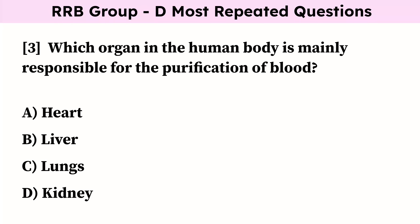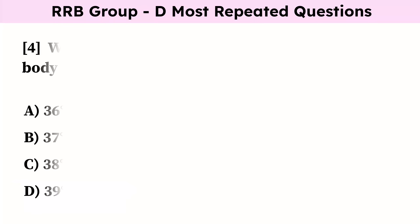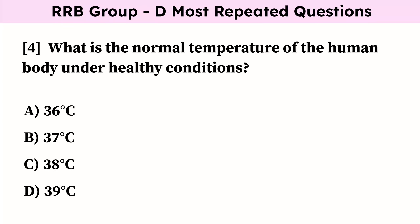Which organ in the human body is mainly responsible for the purification of blood? Correct answer is kidney. What is the normal temperature of the human body under healthy conditions? Correct answer is 37 degrees Celsius.